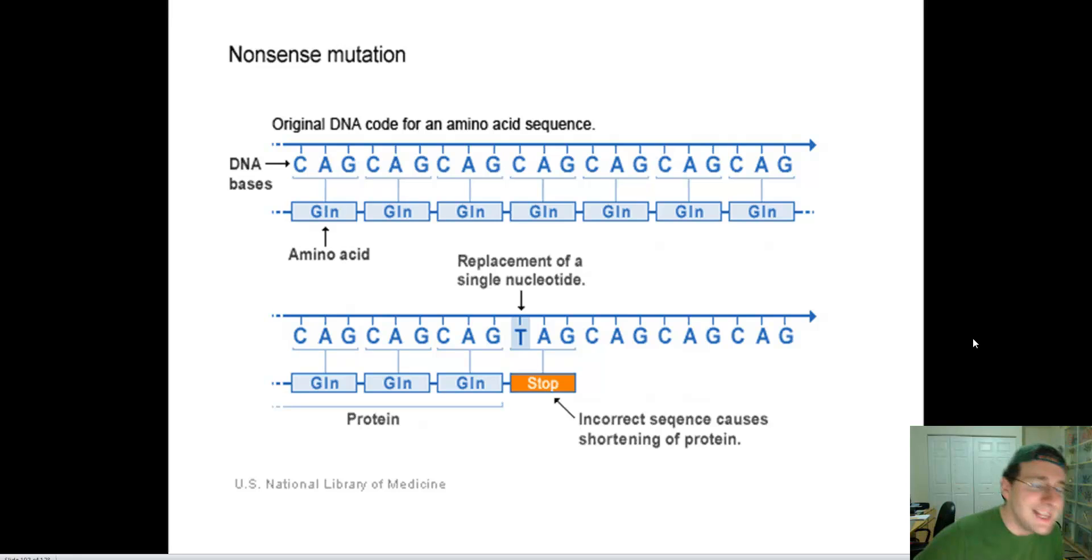A nonsense mutation happens because of a change that actually changes so much that it either leads to the protein not being built, not starting and stopping prematurely, or changing so much because of a frameshift that the protein is not capable of doing its job at all. Frame shift mutations, mutations that cause the protein to stop earlier, or mutations that cause the protein to not even start are called nonsense mutations. You see an example of a substitution leading to a nonsense mutation because you ended up changing the code to send a message to stop the protein.